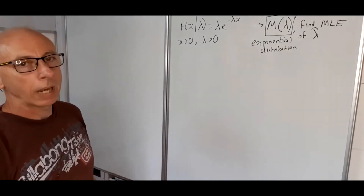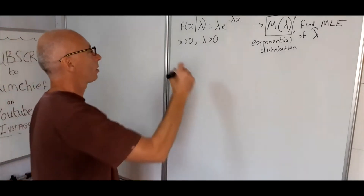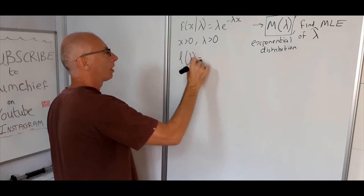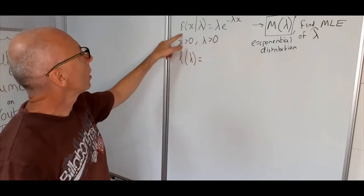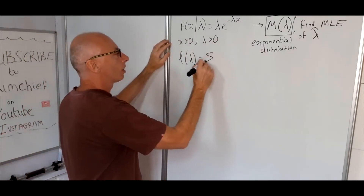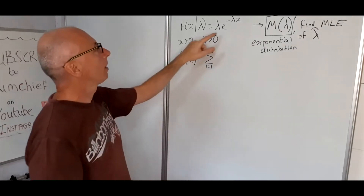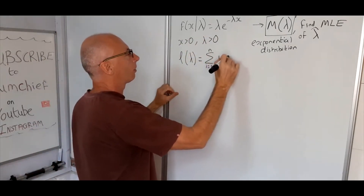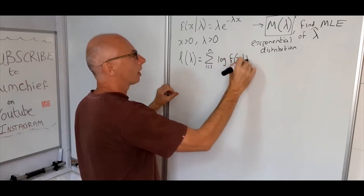So how are we going to find the MLE? Well, first we find the log-likelihood. The log-likelihood of lambda equals the sum from i = 1 to n of log f(x_i | lambda).